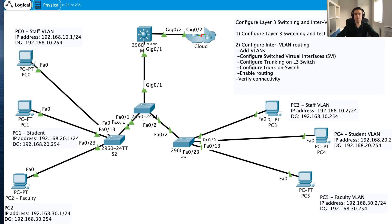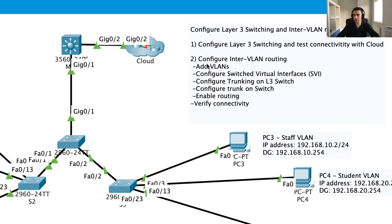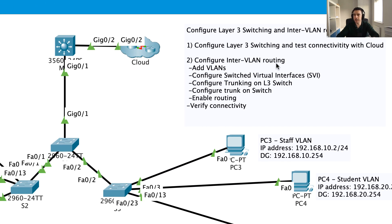Hi guys, thanks for joining me for Part 3 of configuring Layer 3 switching and inter-VLAN routing. We left off in Part 2 where we started to configure our inter-VLAN routing — we added VLANs to our Layer 3 switch and configured our switch virtual interfaces. But at this moment in time, we don't have inter-VLAN communication.